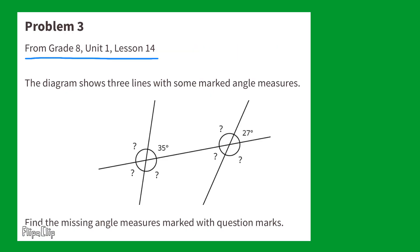Problem number three from eighth grade, unit one, lesson 14. The diagram shows three lines with some marked angle measures. Find the missing angle measures marked with question marks.